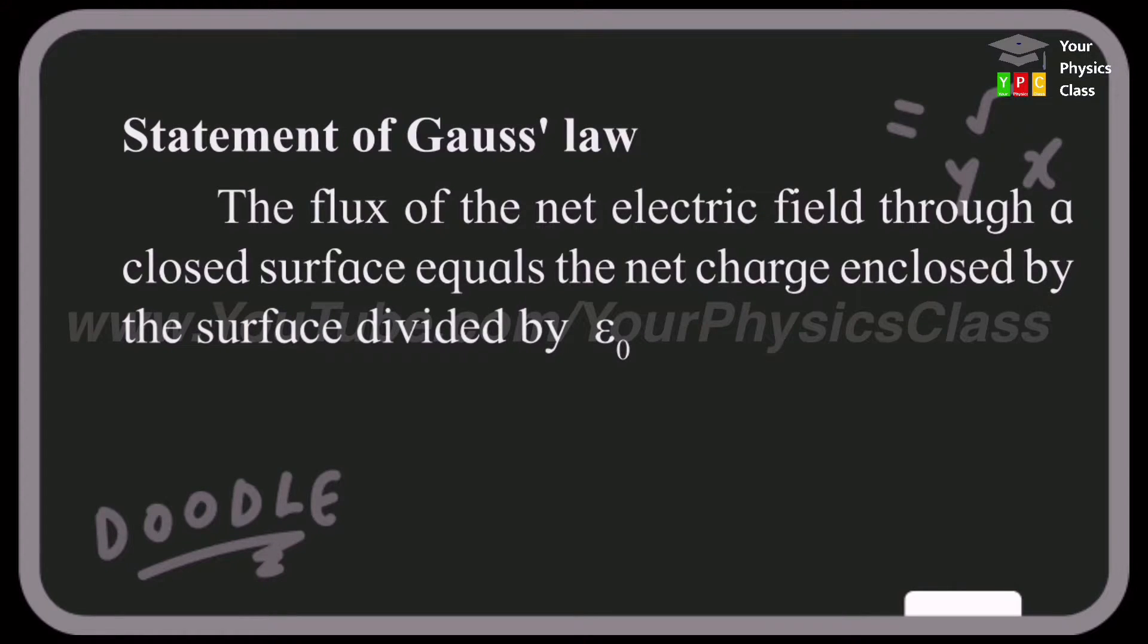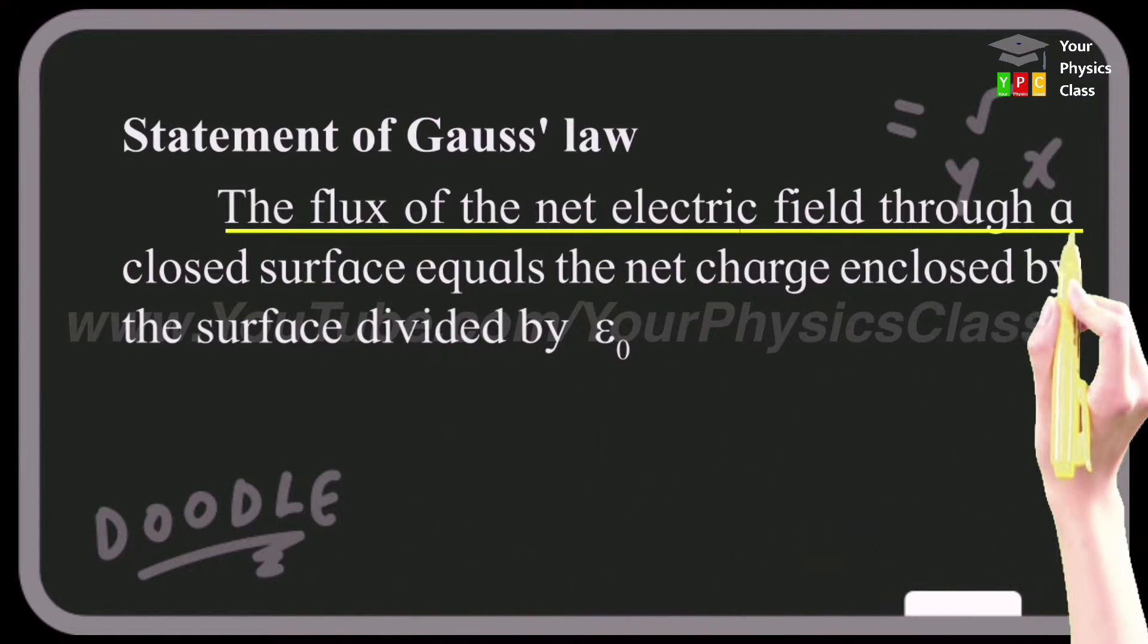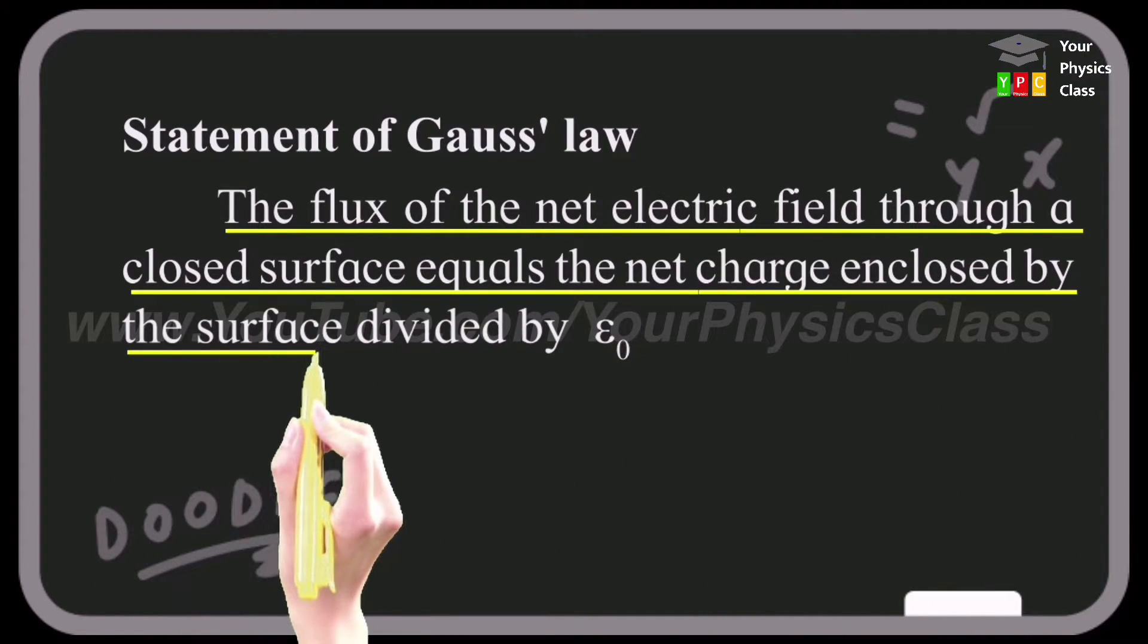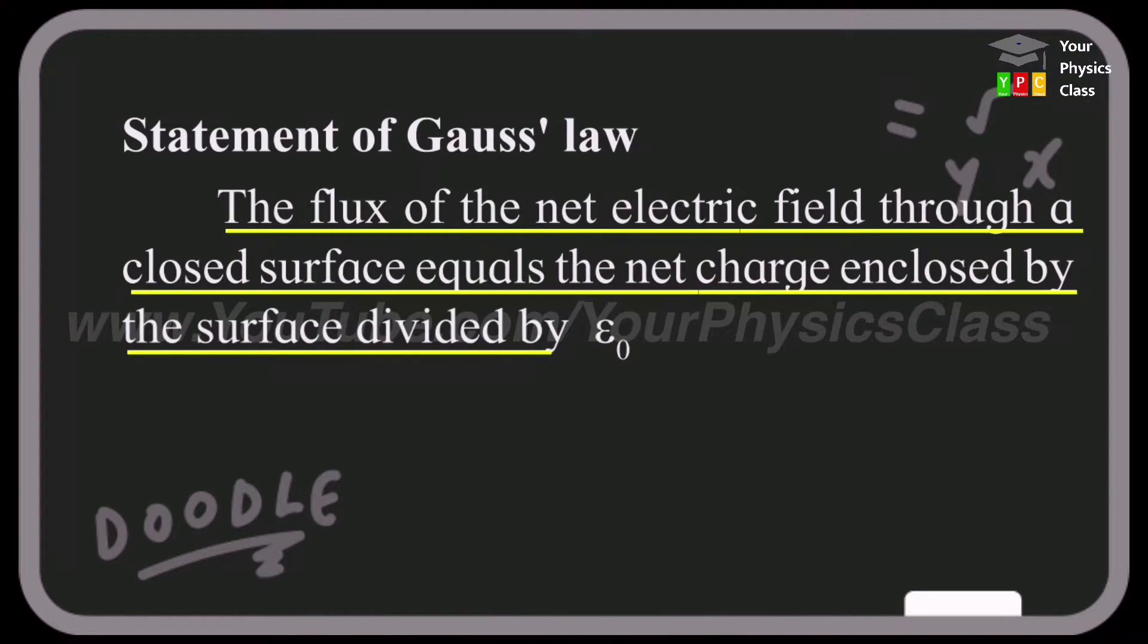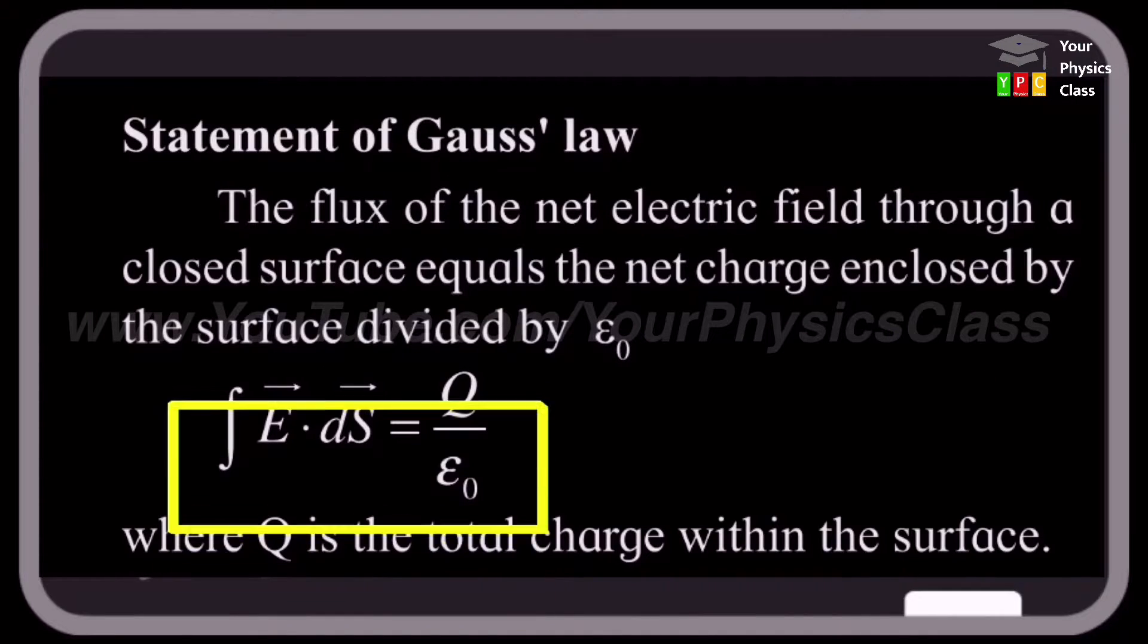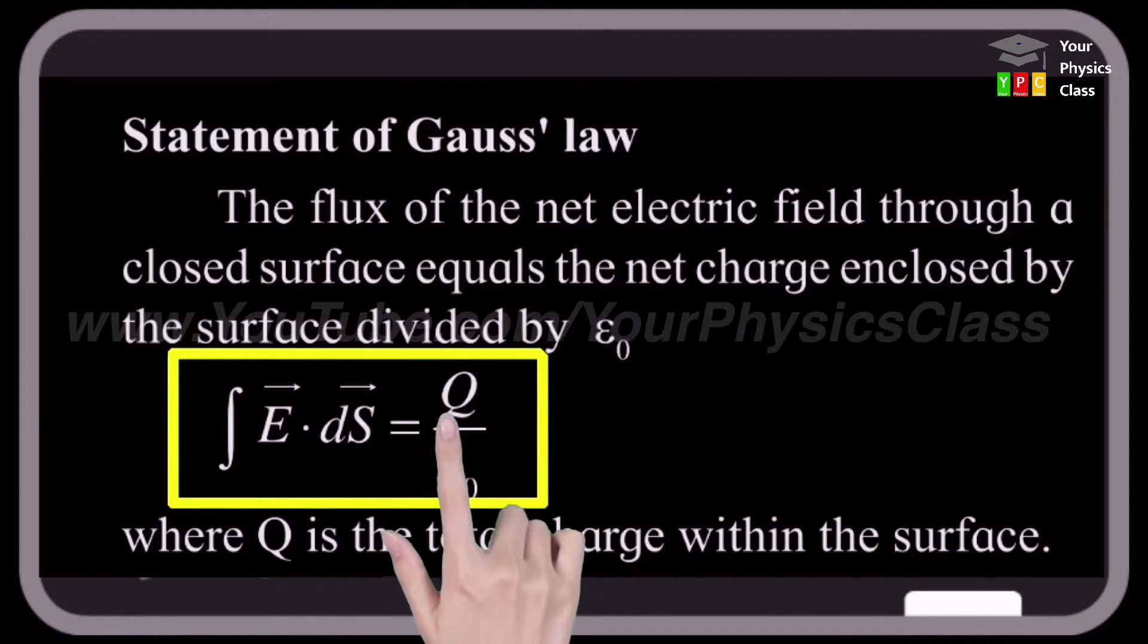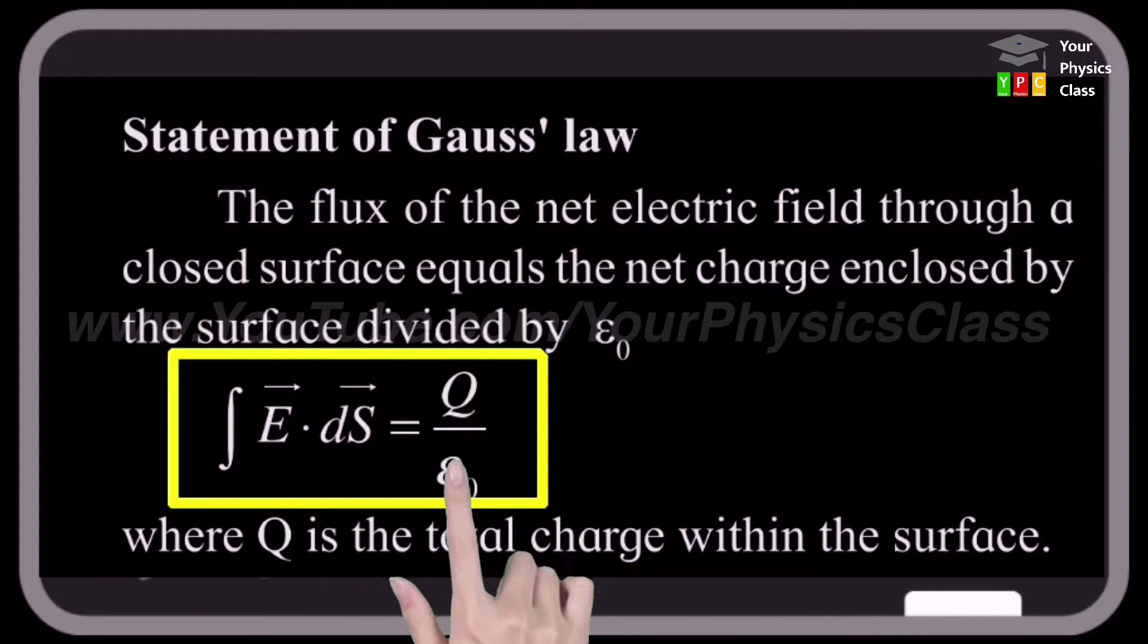The Gauss law states that the flux of net electric field through the closed surface equals the net charge enclosed by the surface divided by epsilon zero, where epsilon zero is the permittivity of free space. Mathematically, the net flux is written as integration of vector E dot vector dS equals net charge denoted by q divided by epsilon zero.